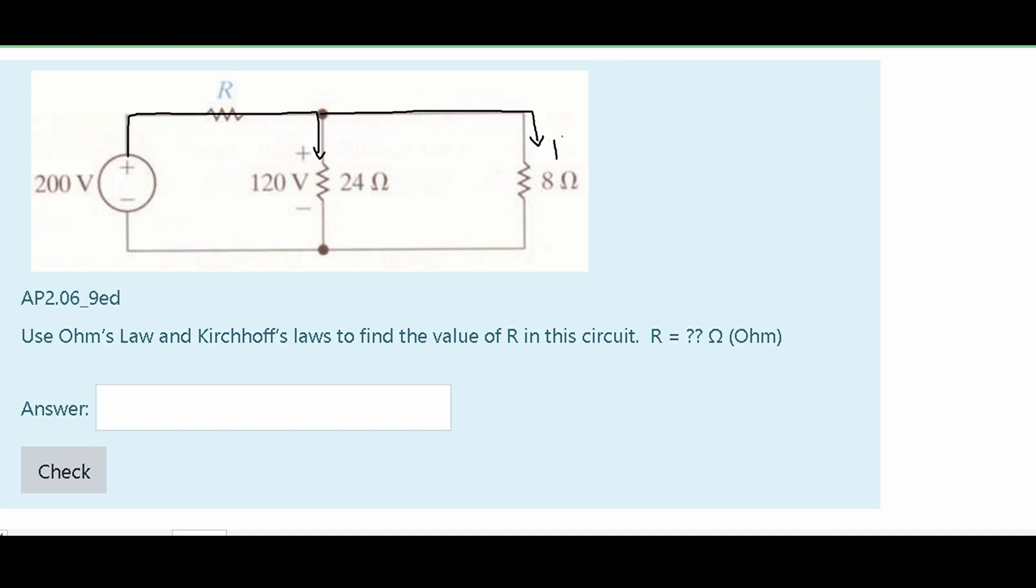That means this right here has to be carrying 120 volts, since the middle is carrying 120 volts. That means 80 volts is stopped at this resistor. So we're going to have 80 volts, and that is going to be the voltage going through this resistor.